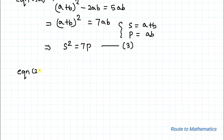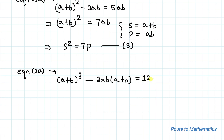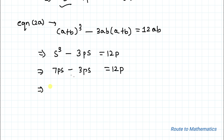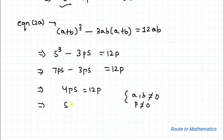Similarly, equation 2a becomes (a+b)³ − 3ab(a+b) = 12ab. Substituting s and p we get s³ − 3ps = 12p. From equation 3, s² = 7p, so s³ = 7ps. Substituting: 7ps − 3ps = 12p, which gives 4ps = 12p. Since a and b are non-zero, p is also non-zero, so we can divide both sides by p, giving s = 3.